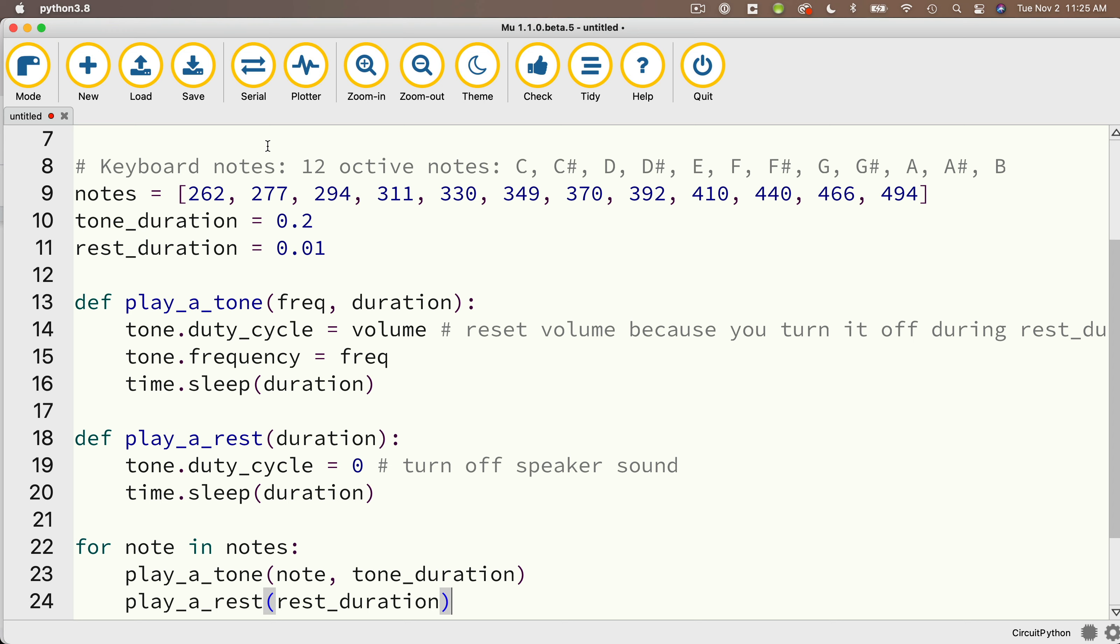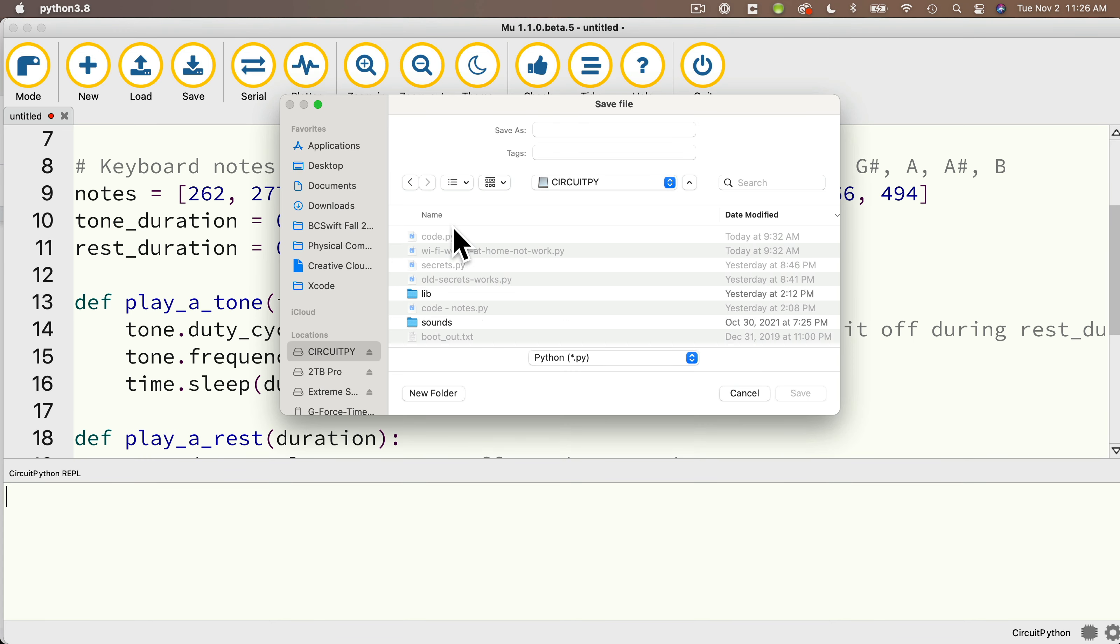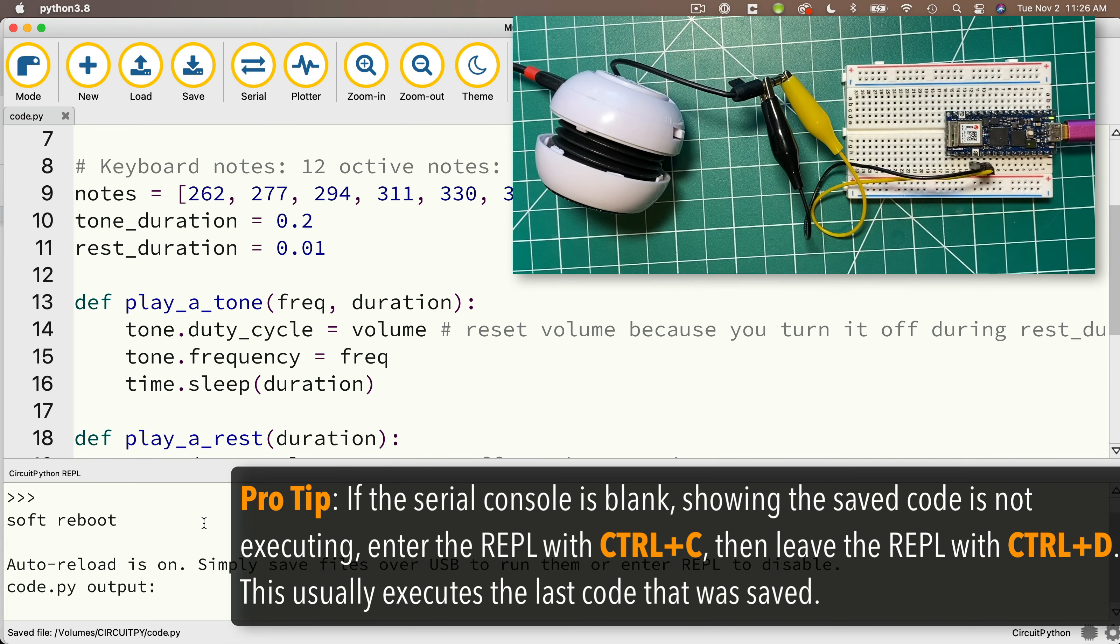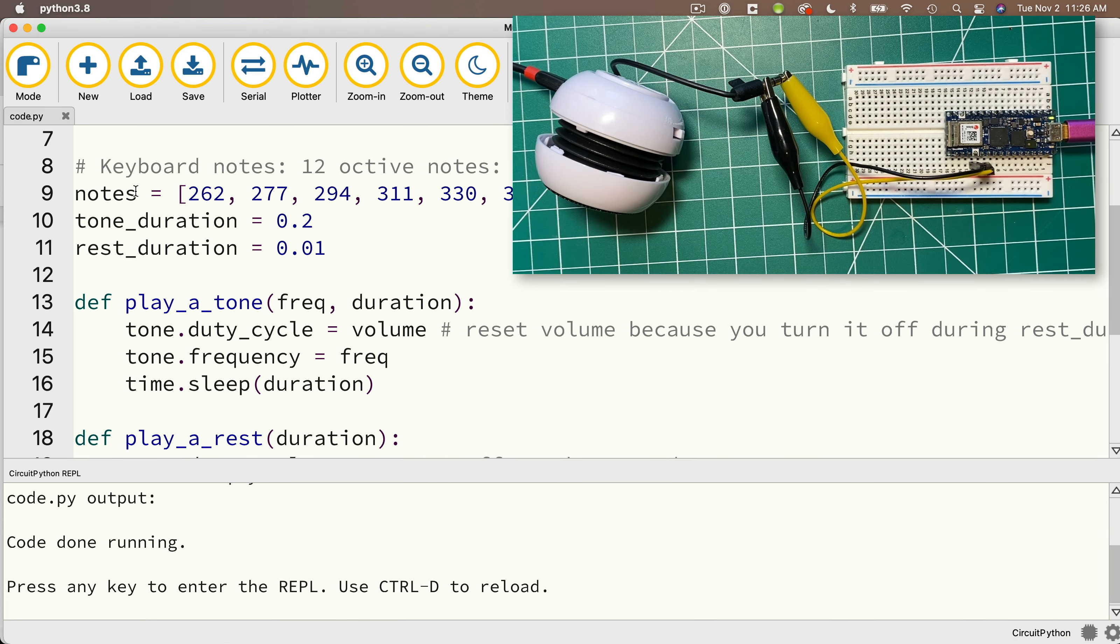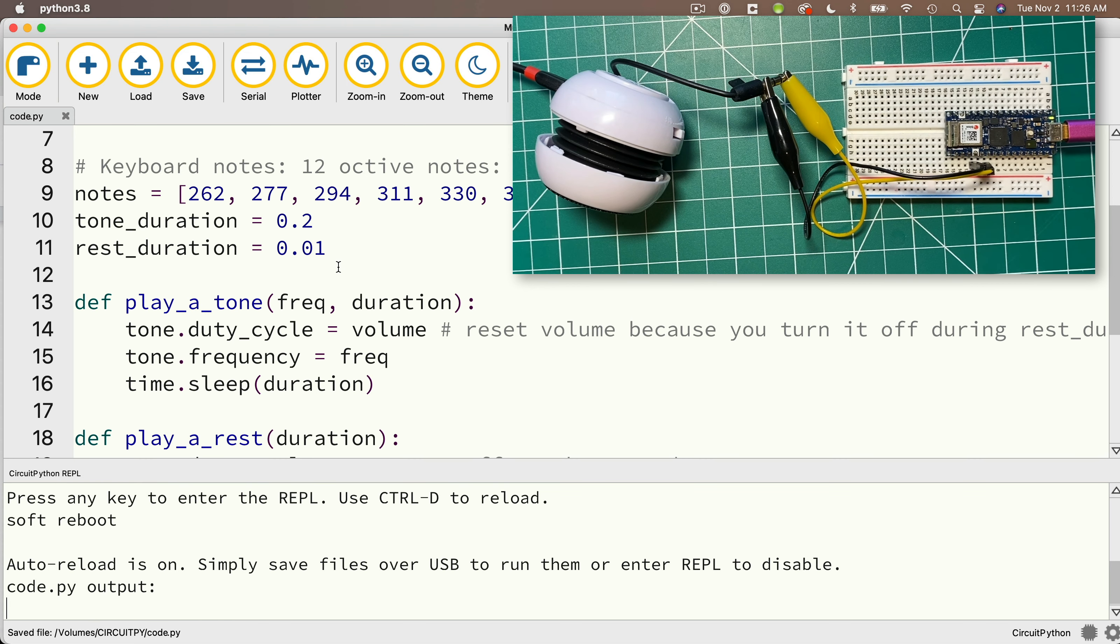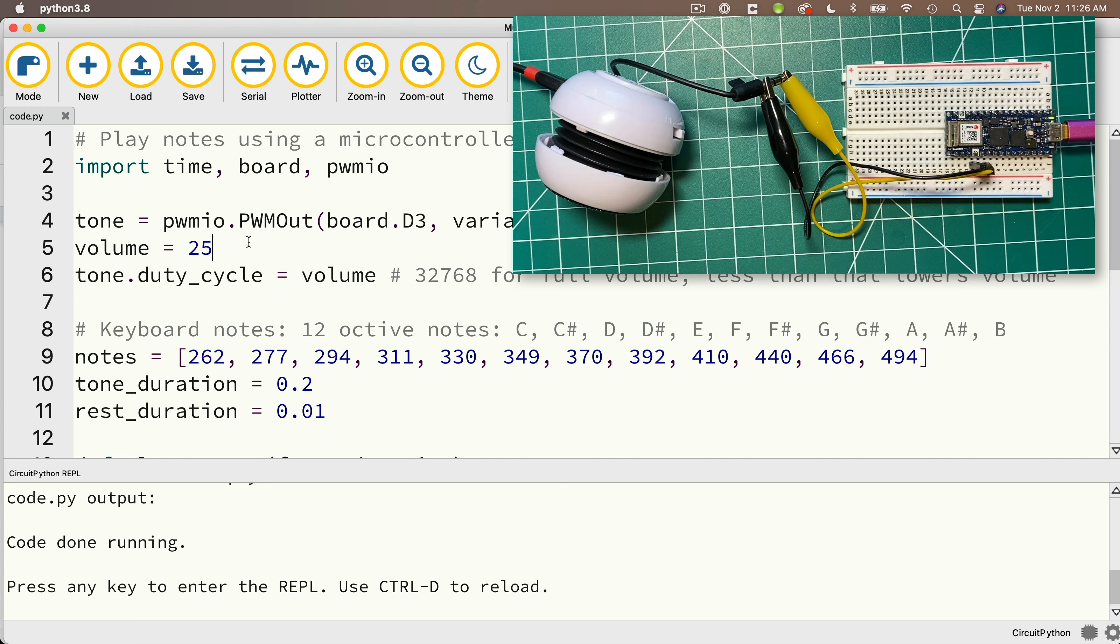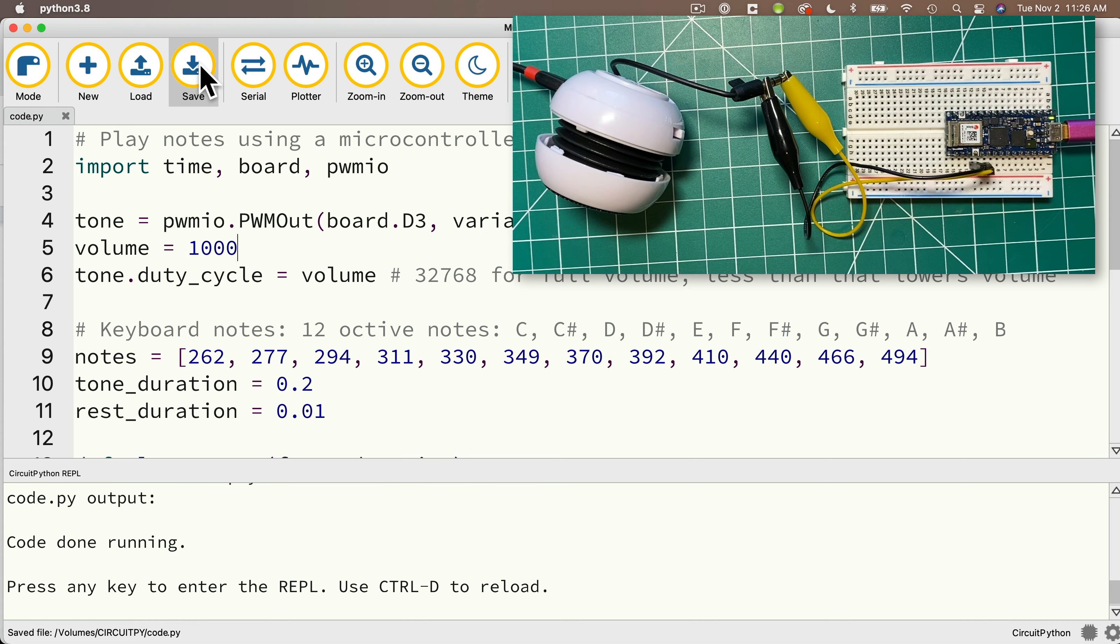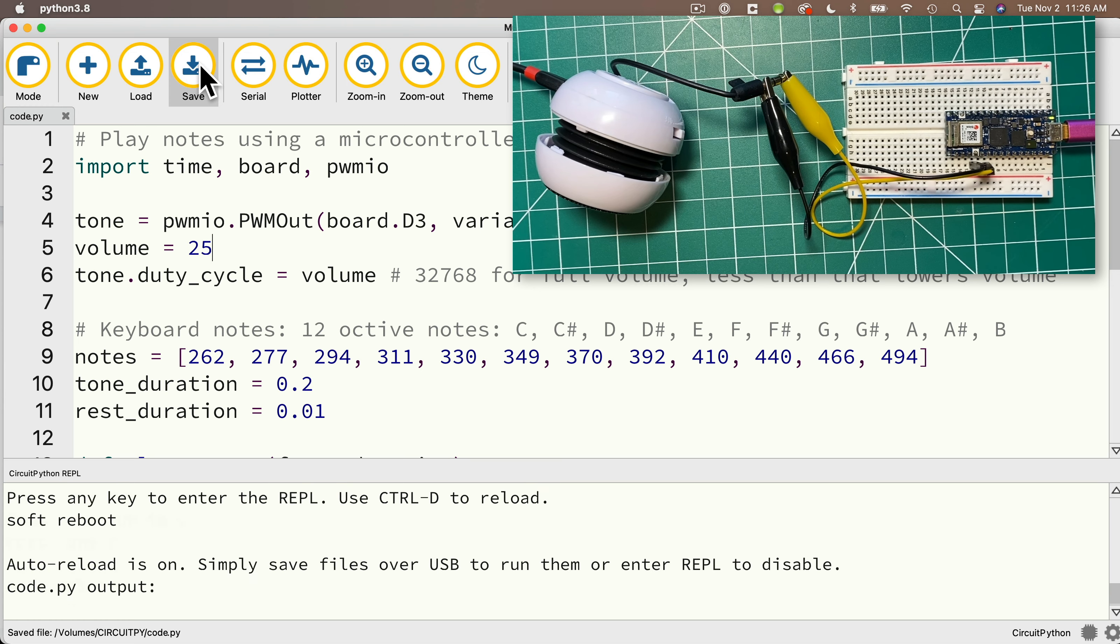Then we can open up our serial console, then save this to the circuit pi volume as code.py. And for some reason, my code's not executing here. This happens sometimes. So if that does happen to you, just click down on the REPL, then type control C and control D again. And there we see it's saved and played. You can click save again to play it again. And now I'm going to change my volume to 1000 so you can hear how that sounds. And that's quite a bit louder. So I'm going to change it back. But good job. We've mastered tones on our microcontroller.